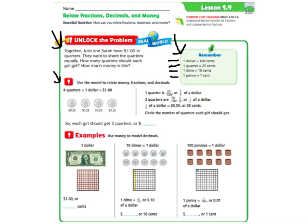Okay, so together, Julie and Sarah have a dollar in quarters. So if we were going to make a dollar out of quarters, we would need four of them. So here's our model. Four quarters is what gives us a dollar.